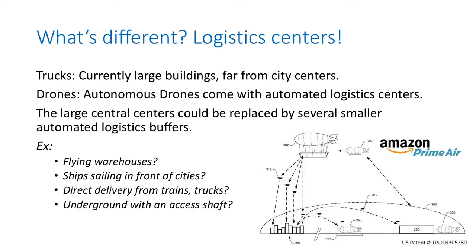The goal is not to leave logistics centers where they are right now. If you have autonomous drones, you can get rid of large buildings close to highways and have decentralized, automated logistics centers. Illustrated here is an Amazon Prime Air patented system for flying warehouses. Potentially you could have ships sailing in front of cities, or deliveries directly from trains or trucks. There's a lot you can imagine once you have autonomous drones handling the last mile of your logistics chain.